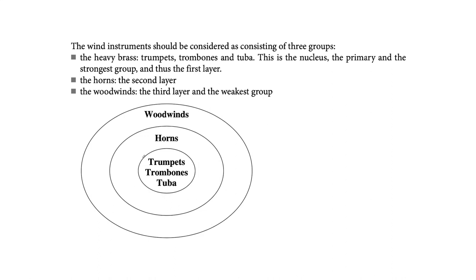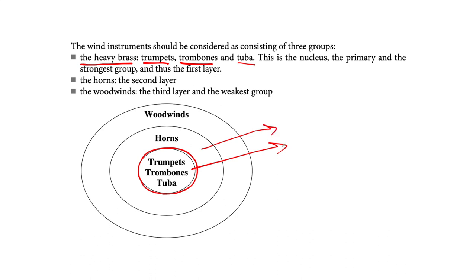The most dangerous part consists of the heavy brass instruments — trumpets, trombones, and tuba. They have to be balanced in themselves. Therefore, it is highly recommended to start instrumenting with this section, with heavy brass instruments. Then the horns come in the second layer. After you have balanced the heavy brass instruments, you can add horns to the texture. And finally, woodwind instruments. This is the third layer and so the weakest group of the wind instruments.